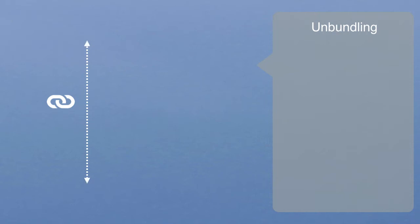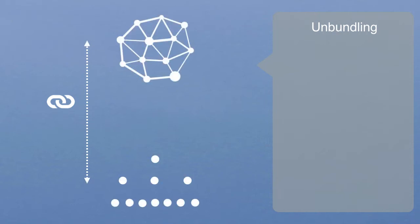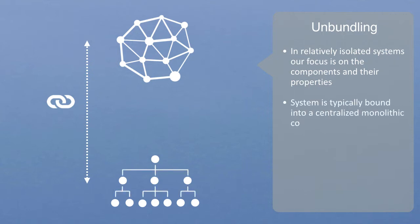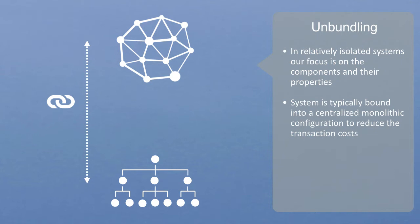As we go from a system with a relatively low level of connectivity to one with a very high level of connectivity, the makeup and behavior of the system changes fundamentally. In relatively isolated systems, our focus is on the components and their properties. Due to the high cost of interaction, the system is typically bound into a centralized monolithic configuration to reduce the organization's overall cost of transactions. But when we reduce the cost of interaction, as IT, transport and other innovations have done, then connectivity increases and the system can become unbundled from its centralized configuration as components become distributed out and re-coordinated through the network.